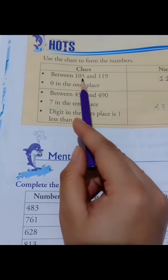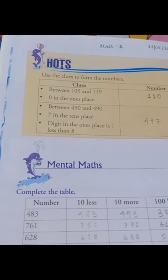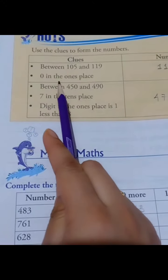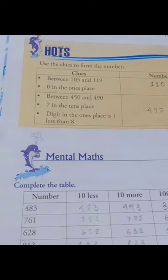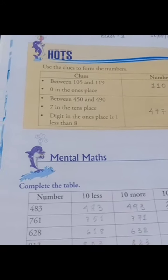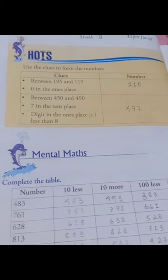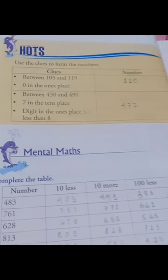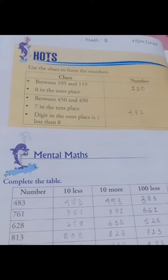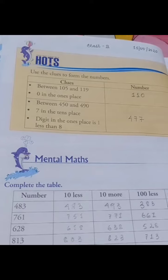The number is between 105 and 119, and the number has 0 in the ones place. So we look between 105 and 119 for a number with 0 in the ones place.